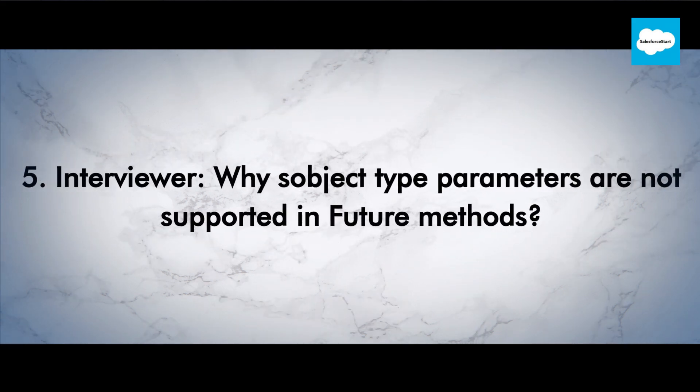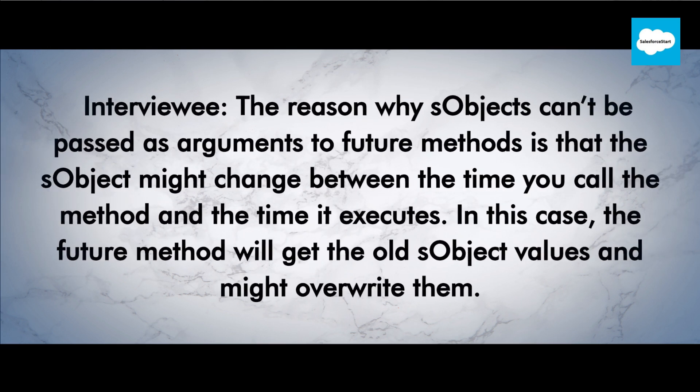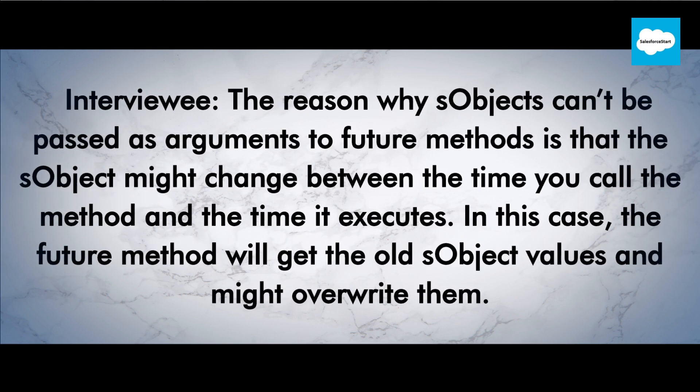Interviewer: Why are sObject type parameters not supported in future methods? Interviewee: The reason why sObjects can't be passed as arguments to future methods is that the sObject might change between the time you call the method and the time it executes. In this case, the future method will get the old sObject values and might overwrite them.